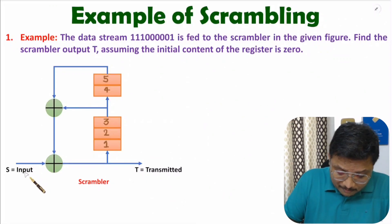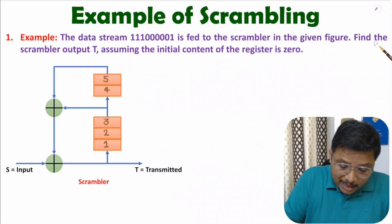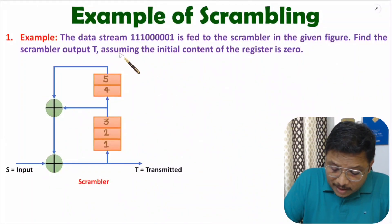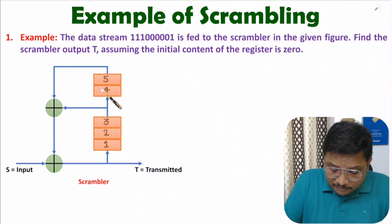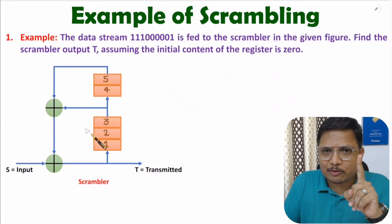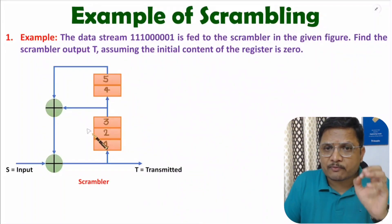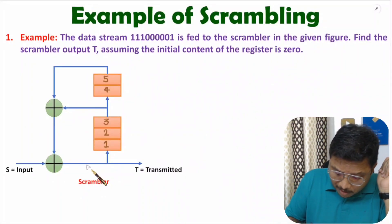You can observe here we have a scrambler circuit where the input data stream is triple 1, 5 times 0, and 1. We need to identify the output of the scrambler, which is T. We need to assume the initial content of the register is zero. We have a 5-bit register D1, D2, D3, D4, and D5, all initially zero. This question can be solved in two ways — one is manual calculation which is tedious and error-prone, so we will follow a standard process step by step.